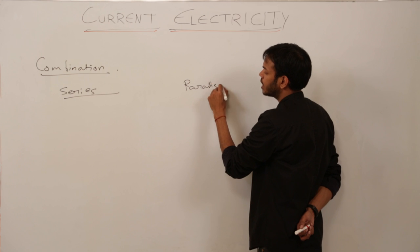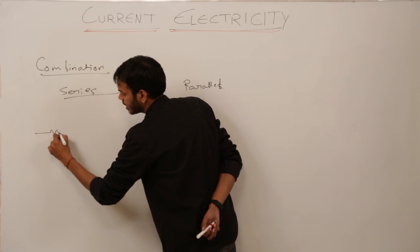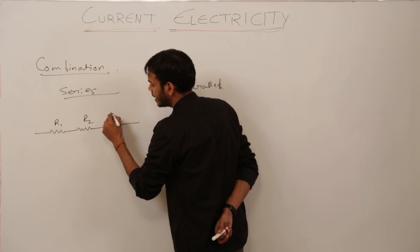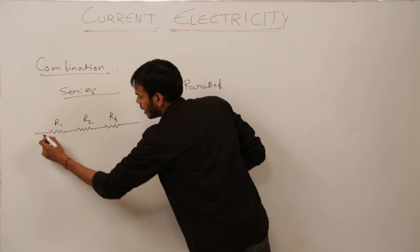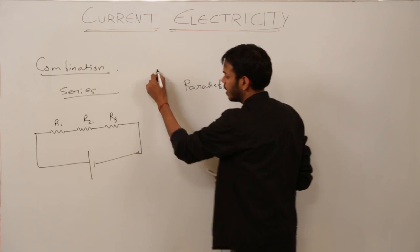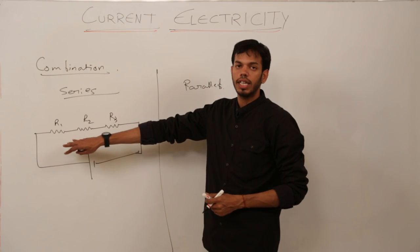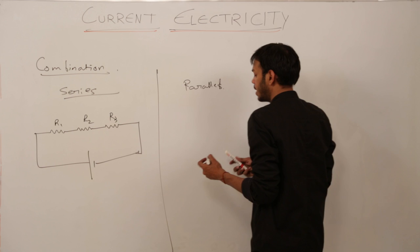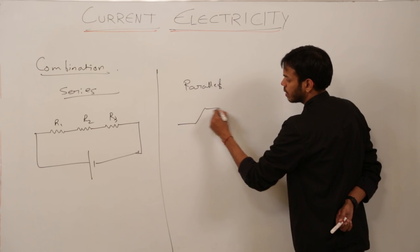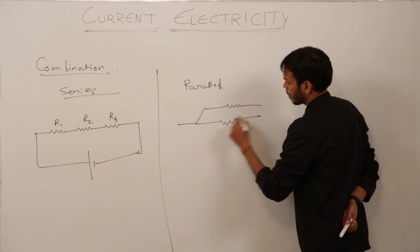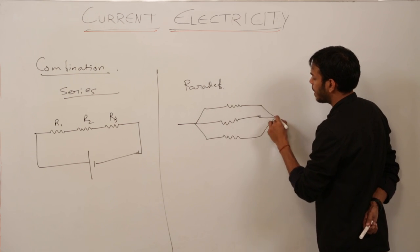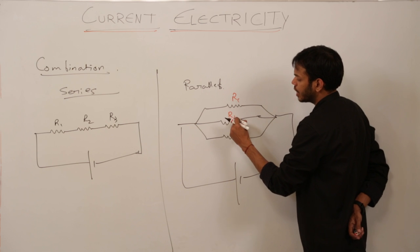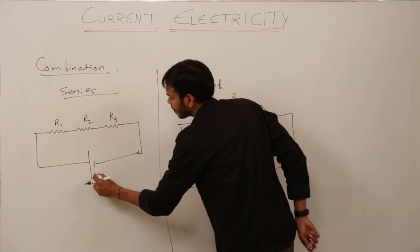What are series and parallel combinations? Consider this diagram. These three resistors R1, R2 and R3 are connected in series. There has to be some voltage or potential difference of the whole circuit — yes, it is right, or EMF of the whole circuit. What else? The parallel combination — this is the parallel combination. What is the difference between series and parallel combination? In parallel combination, each resistor is getting equal voltage.